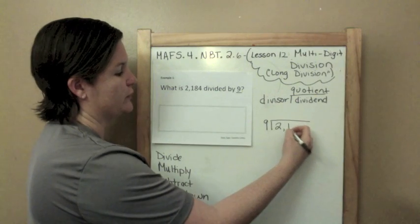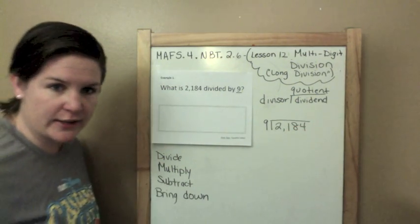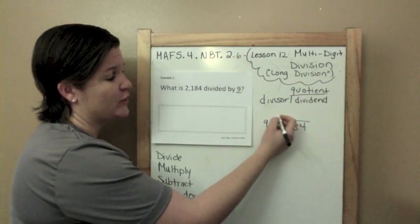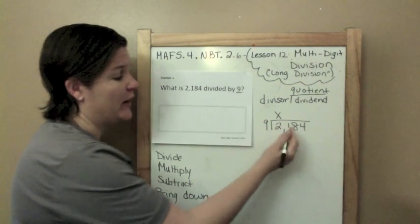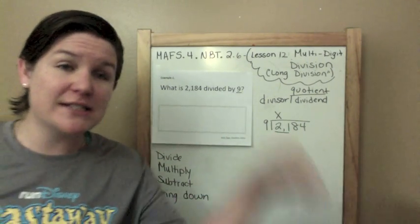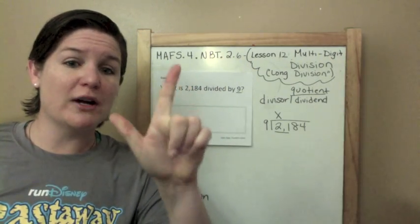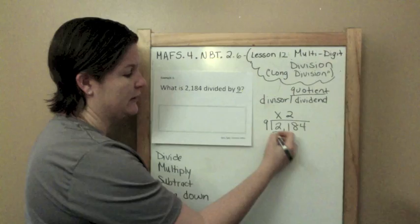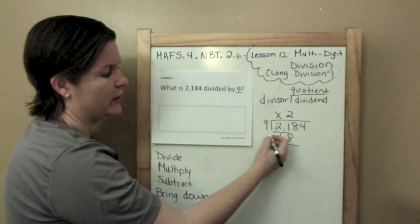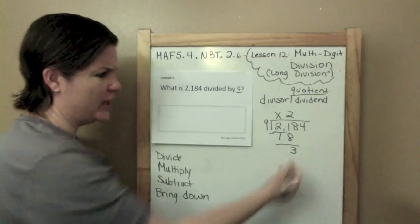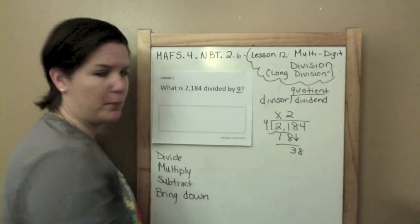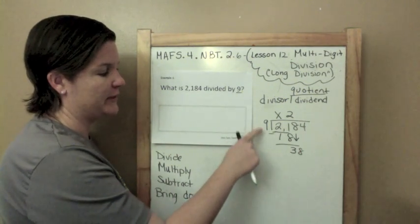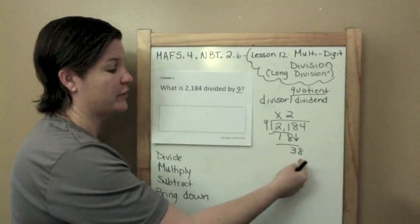Now I divide. I say how many times does 9 go into 2? It can't. I like to put a little X right there saying that it cannot go into 2. Now I gotta move on. How many times does 9 go into 21? Let's count by nines to see: 9, 18, 27 is too much, so at least two times. That was my division step. Now I multiply: 2 times 9 is 18. After I multiply I subtract: 21 minus 18 is 3.